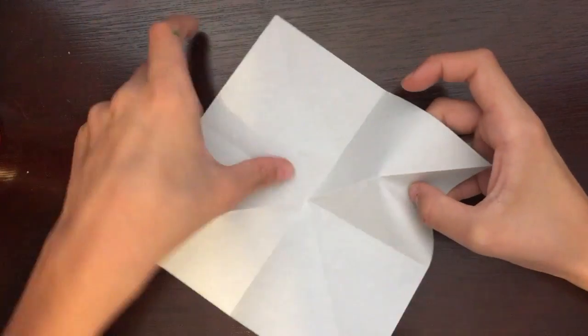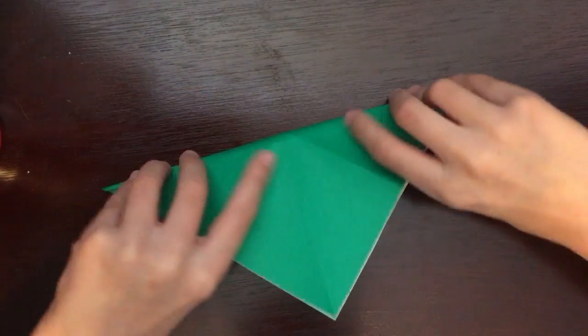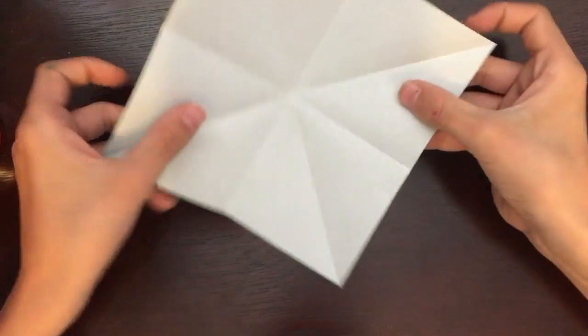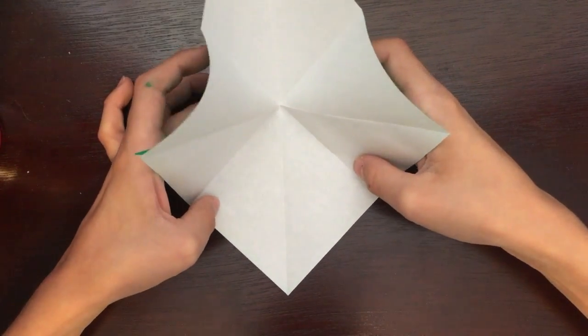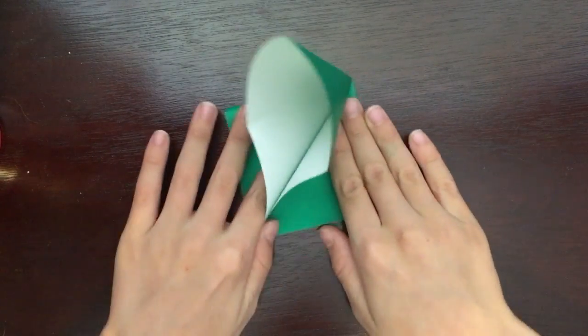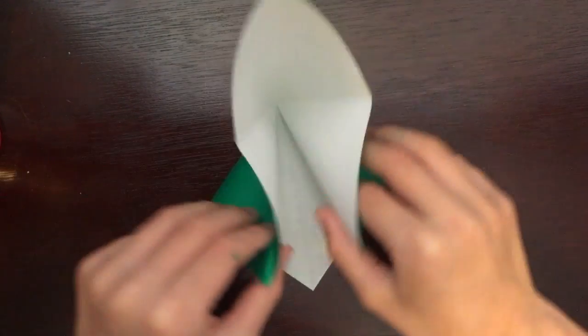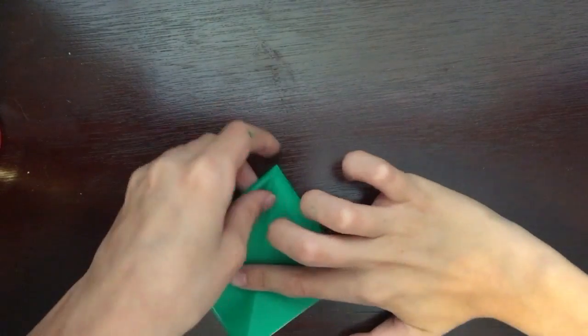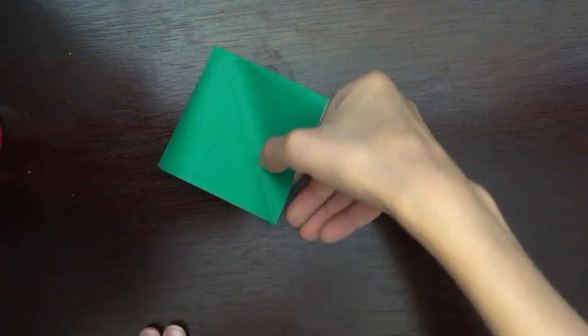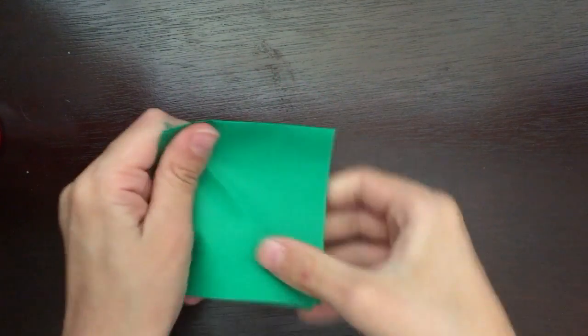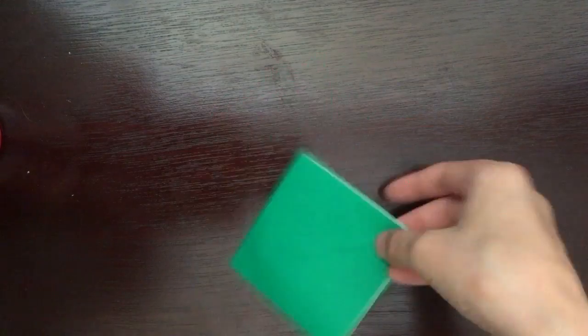But normally you wouldn't do that, that's just optional. I'm going to put it back the way it was. Okay, so how you would normally do it, it's like this, just take it like this, as again like this, and push this down. And there you go, you have your square base. See, square. Like I said, this is used for cranes and we're actually going to be using this for the next base.